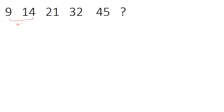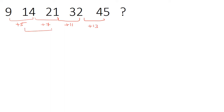Taking the differences: 14 minus 9 is plus 5; 21 minus 14 is plus 7; 32 minus 21 is plus 11; 45 minus 32 is plus 13. Now looking at the second-level differences: 7 minus 5 is plus 2, 11 minus 7 is plus 4, 13 minus 11 is plus 2. So the second differences alternate between plus 2 and plus 4.